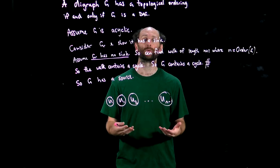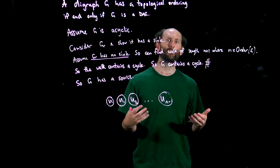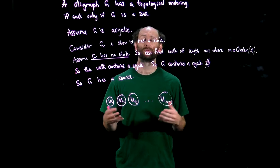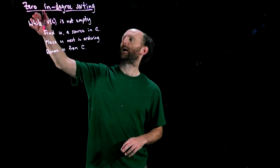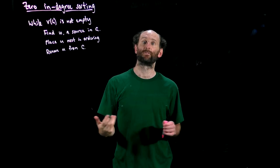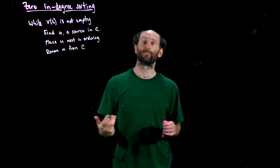So this method of proof gives us a way of finding a topological sort called zero in-degree sorting. Simply, we have the zero in-degree sorting algorithm which finds us a topological sort. We start with the digraph G and we'll continue until we've removed every node from G and placed it in our ordering.